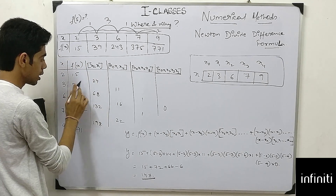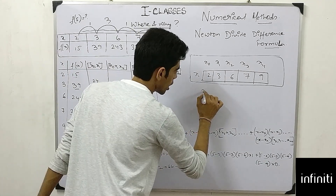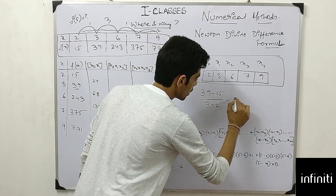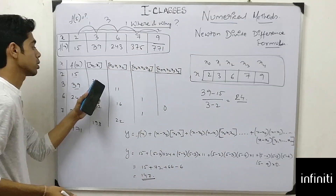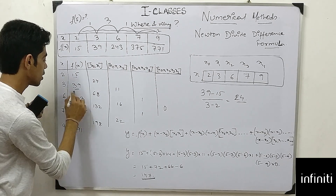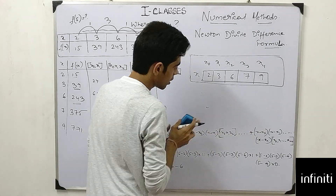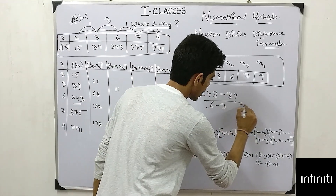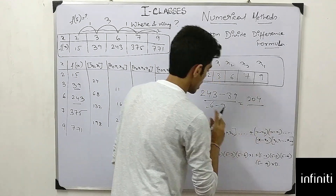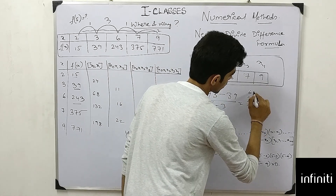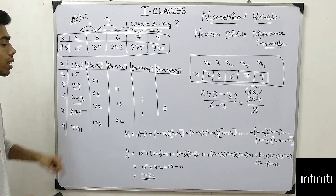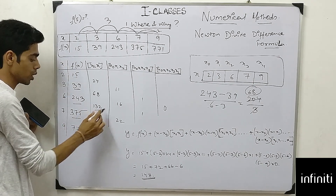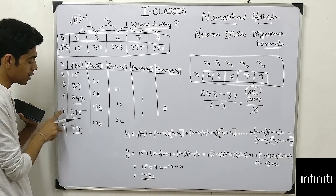To compute the first divided difference f[x0, x1], I calculate: 39 minus 15, divided by 3 minus 2, which gives 24. Then 243 minus 39, divided by 6 minus 3, gives 204 divided by 3, which is 68. Similarly, subtracting and dividing by 7 minus 6 gives 132, and the next entry gives 192.